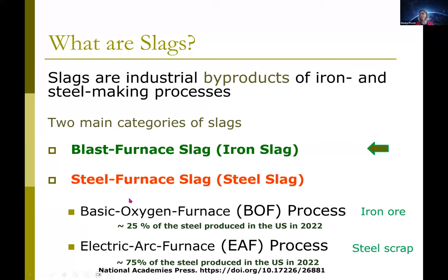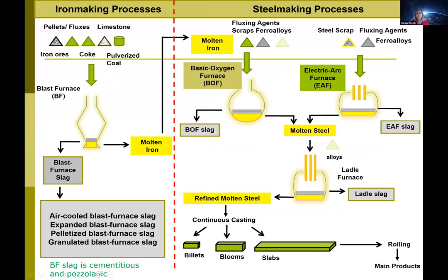In terms of quantities produced yearly, it's estimated that about 9 million tons of EAF slag are produced every year in the US, and about 3 to 4 million tons from the BOF process — a total of about 12 to 15 million tons per year, and 10 times as much worldwide. There is a lot of material that needs to find applications in different fields.